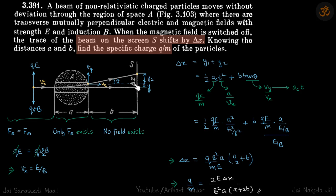So let's start with delta X. Delta X we can write as Y1 plus Y2. So Y1 is this height when it leaves the field. That we can write as half acceleration times T squared. So acceleration in the region in the Y direction is QE by M, and time taken for it to cross the region is the distance upon Vx, because Vx does not change. Electric field is only in the Y direction.